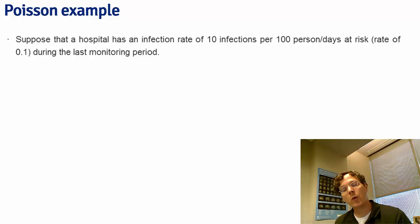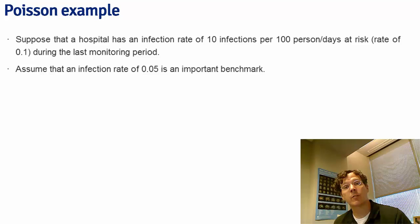We want to assume that a rate of 0.05 infections per person day at risk is an important benchmark. If the rate goes above that, they would implement some quality control procedures.